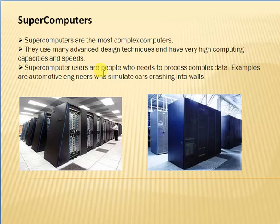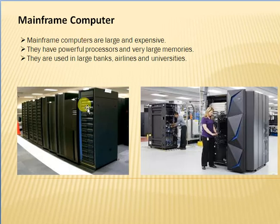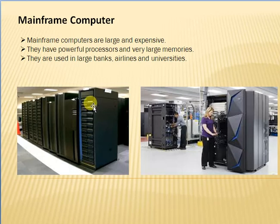These types of computers need very complex processing, great speed and capacity, so we use supercomputers. Next are mainframe computers. Mainframe computers are large and expensive, with powerful processors and very large memories. They are used in large banks, airlines, and universities — whenever you go to an airport, railway station, or bank, you will see these types of computers.